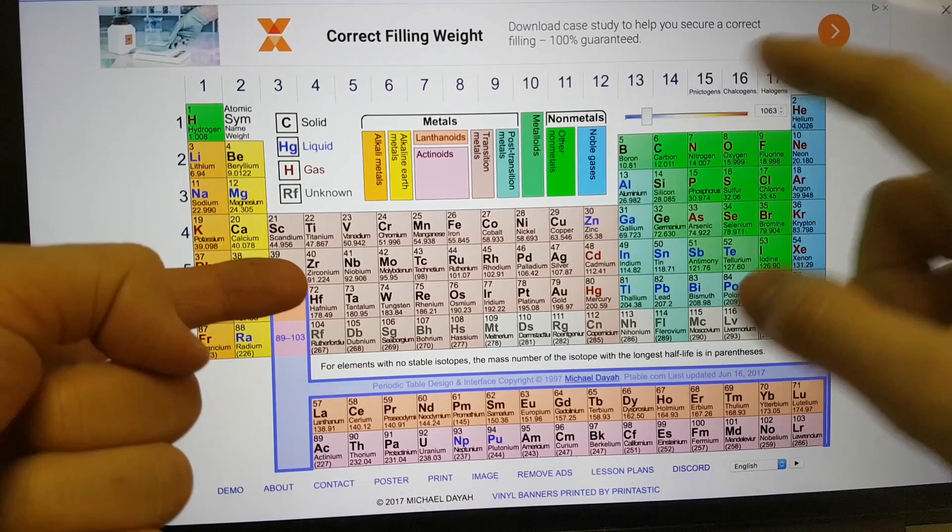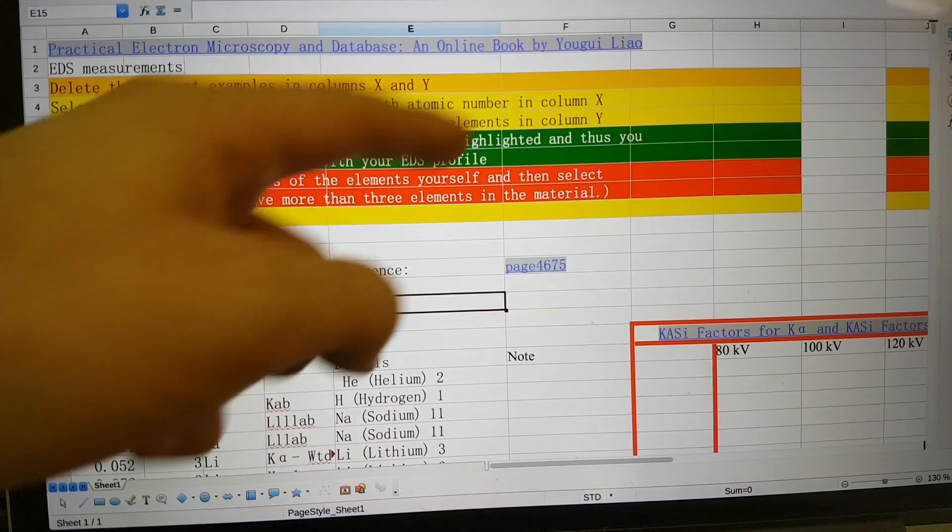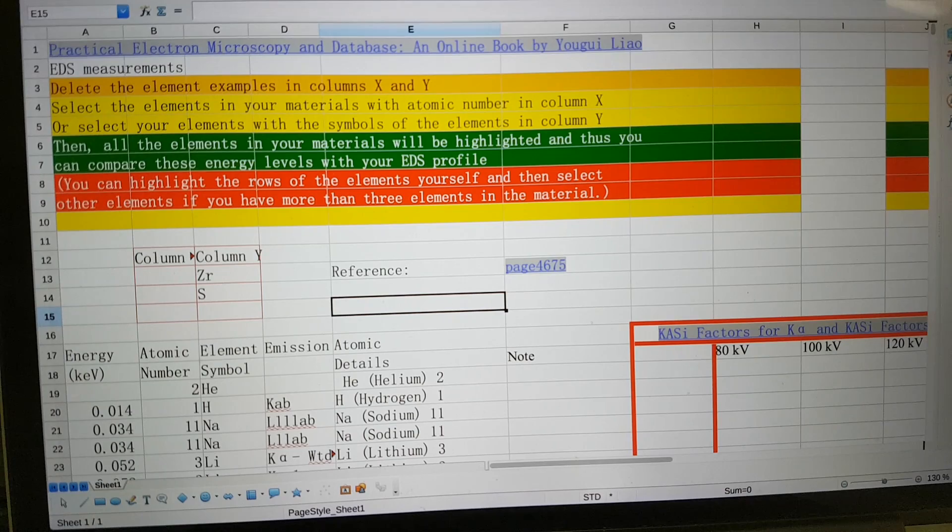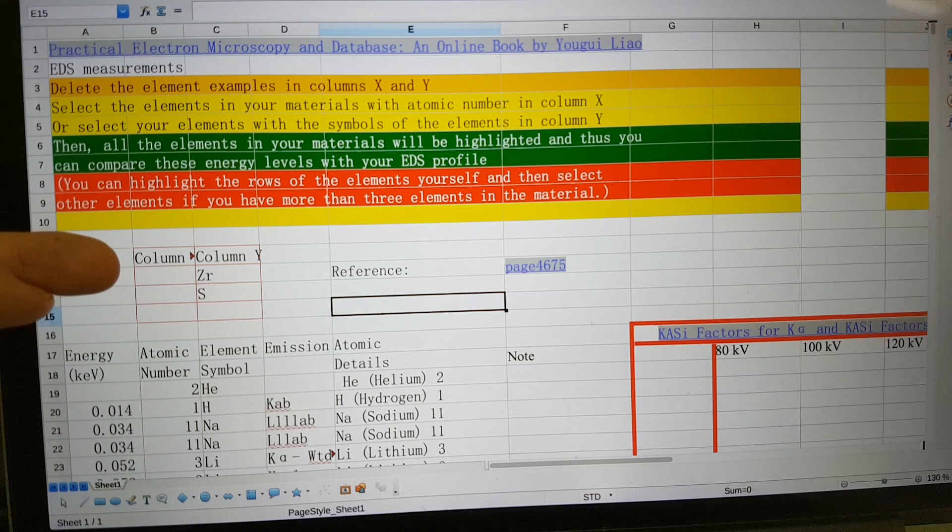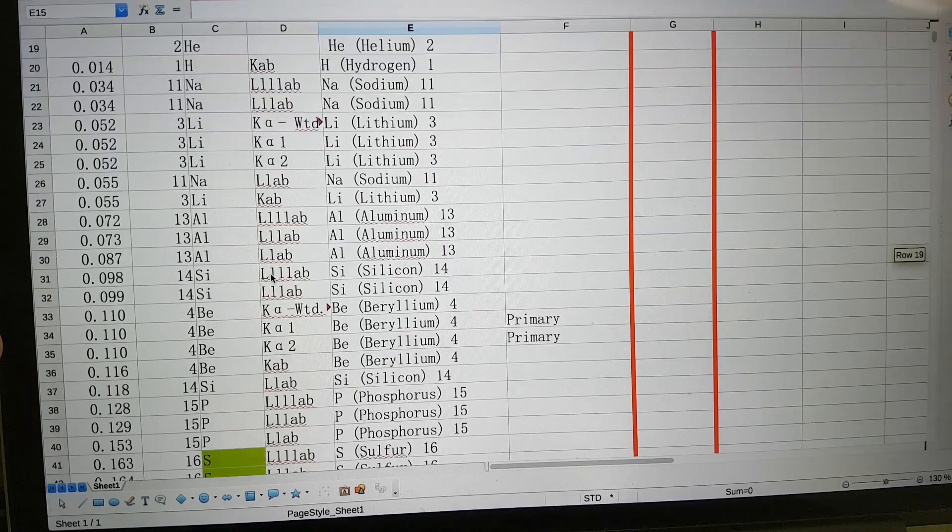Well, yesterday, I showed you a technique where we used a spreadsheet. This spreadsheet here that I got from this online book by Yu Zhui Liao, I'm probably saying that very wrong, but this spreadsheet is available through another video on our YouTube. It's also available in the previous Steemit blog post. But what I was thinking was, if we put the zirconium in here, what is close to zirconium?